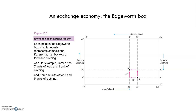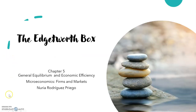A trade from A to B made both Karen and James better off. But how can we know if B is an efficient allocation? The answer depends on whether James and Karen's marginal rates of substitution are the same at point B, which in turn depends on the shape of their indifference curves. We will look at this in the next video.